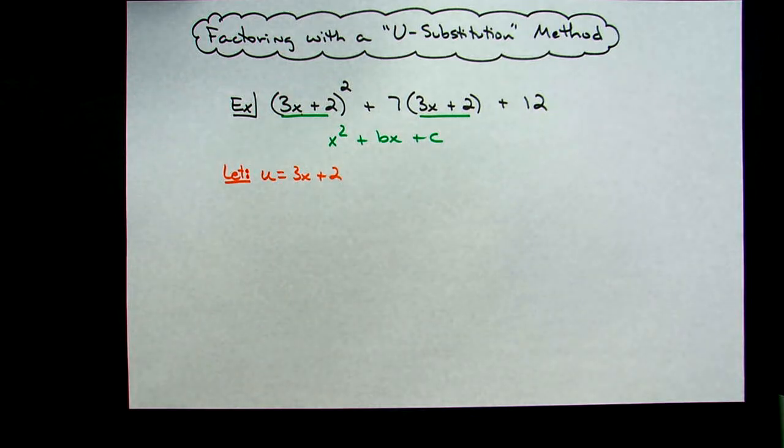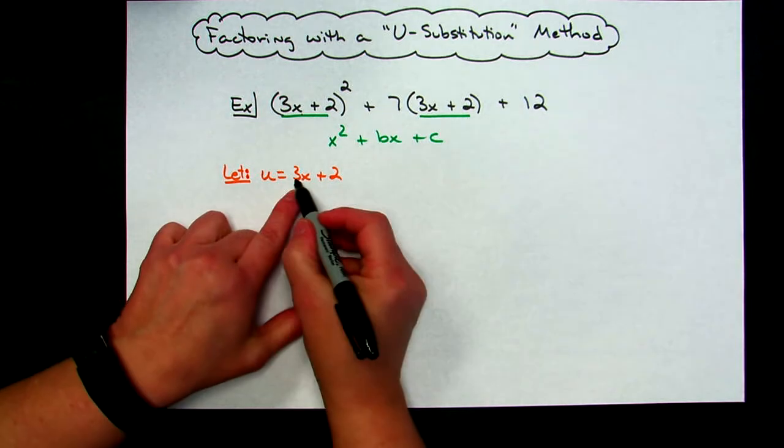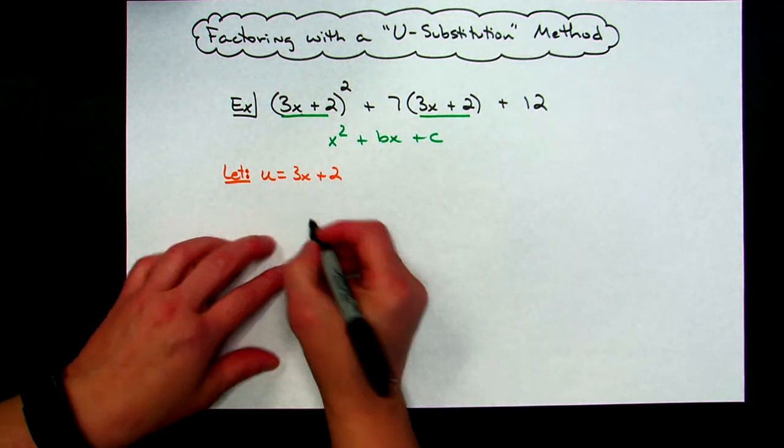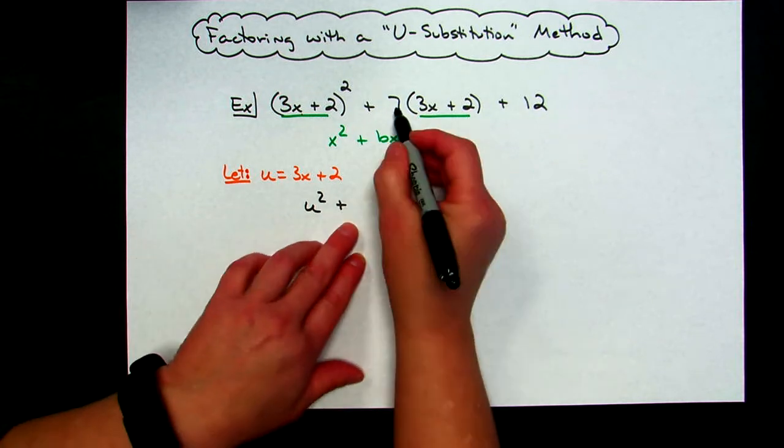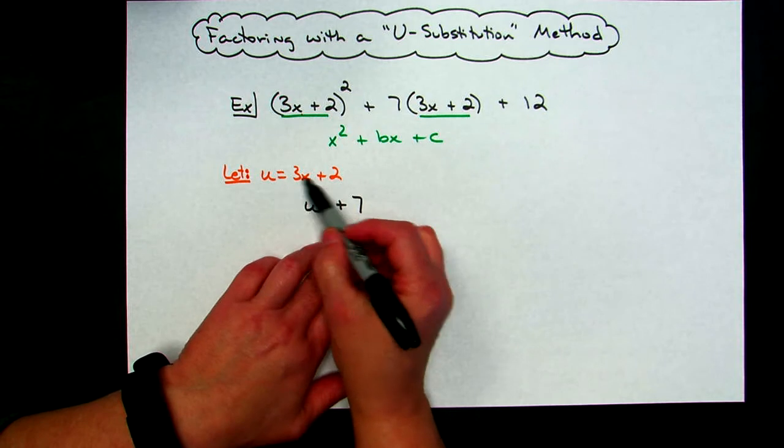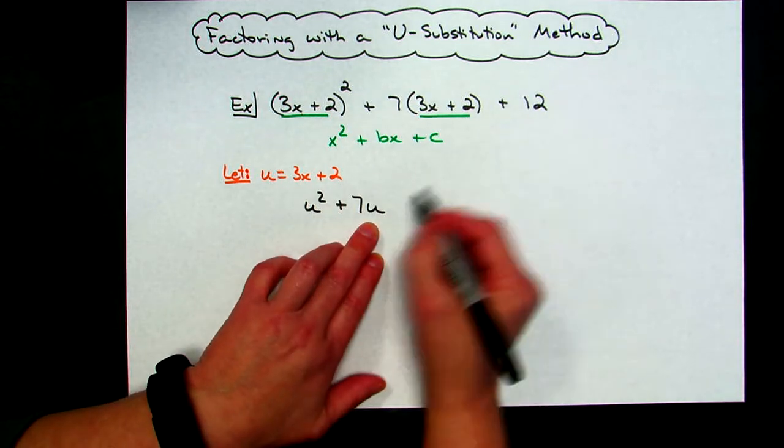So now what I can do is I can rewrite the problem that I was given into a much simpler form. Instead of having the 3x+2 right here, I can replace that with u because I just said I'm going to let u equal that. So I can have a u² plus the 7 coefficient would stay there, I'm going to take that 3x+2, I'm going to replace it with my u to clean it up, make it look a little bit nicer there, and then plus 12.